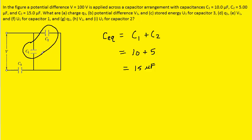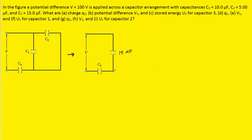We'll redraw the circuit, combining those two into a single capacitor. Here is that equivalent capacitor. Next, we will combine these two capacitors, which are actually in series with one another. To find the equivalent capacitance, we're going to use a different equation.